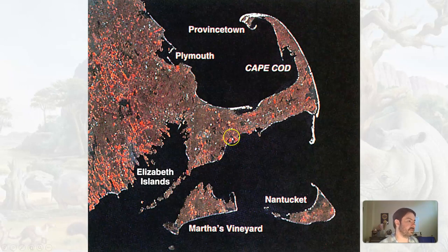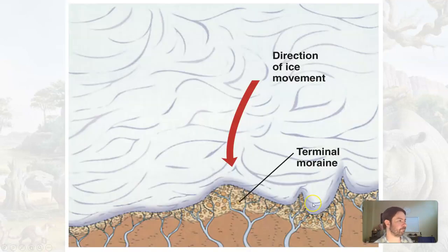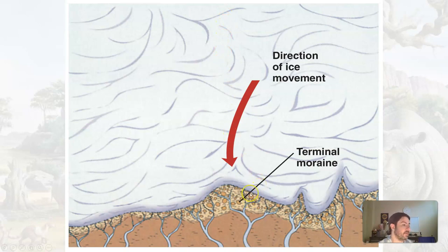This is Cape Cod — that arm that sticks out from Massachusetts. Here's Plymouth, as in Plymouth Rock. So Cape Cod, and then Martha's Vineyard and Nantucket. During some of the Pleistocene glaciation, you had glaciers moving that far south. We had terminal moraines deposited at the end.